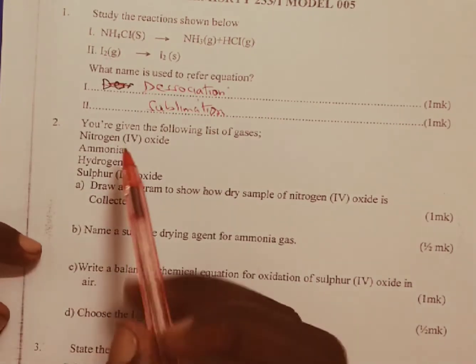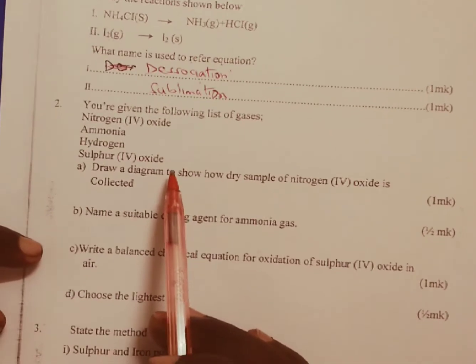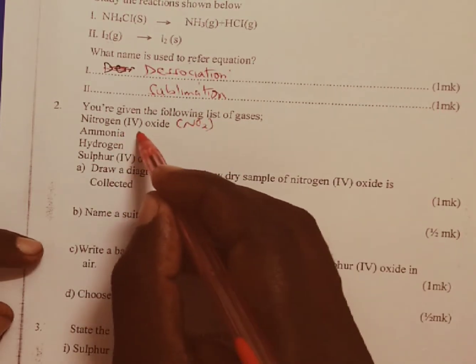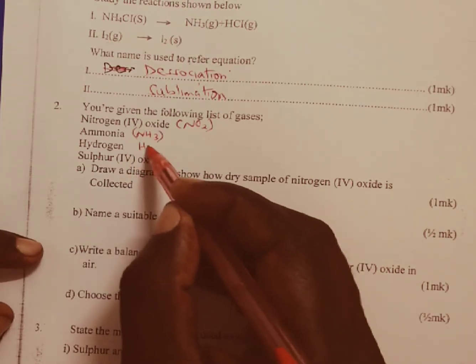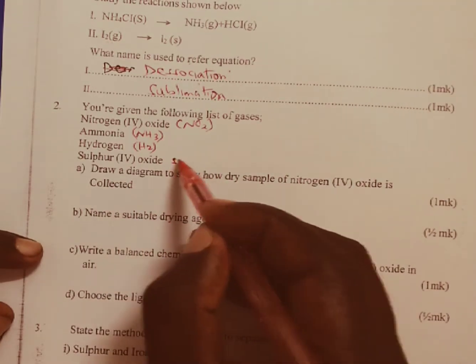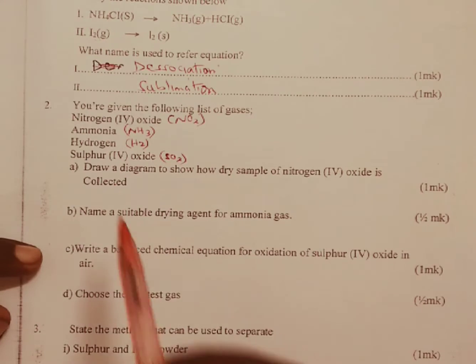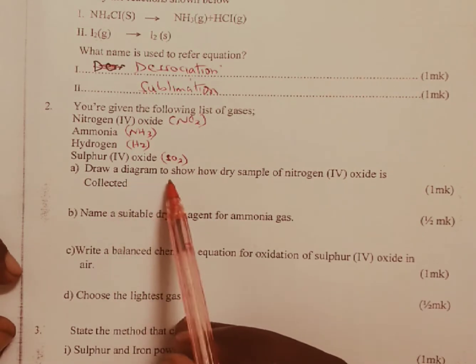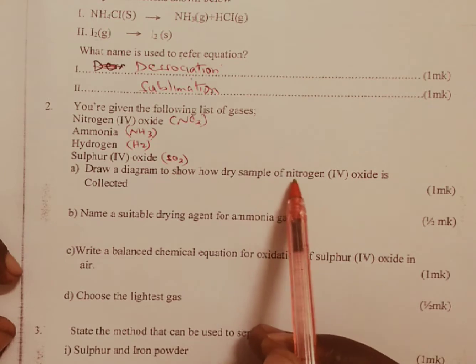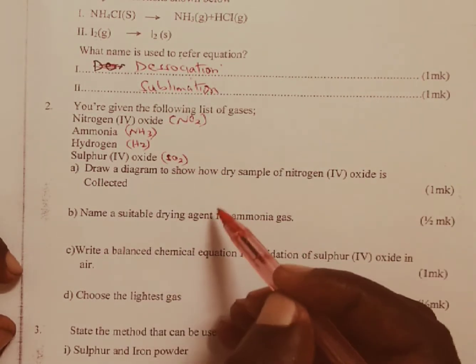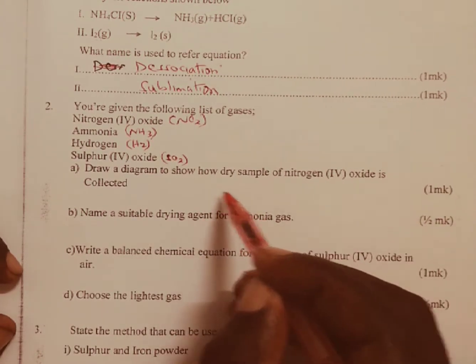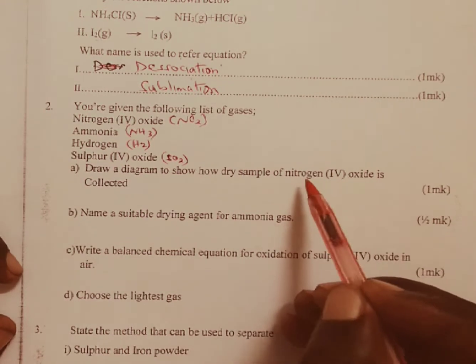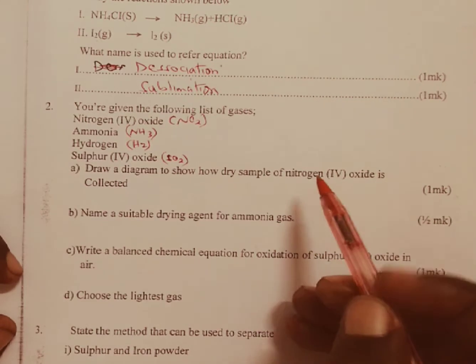Now we move to question number two. You are given the following list of gases: nitrogen 4 oxide (NO2), ammonia (NH3), hydrogen (H2), and sulfur 4 oxide (SO2). Part A asks: draw a diagram to show how a dry sample of nitrogen 4 oxide is collected. Nitrogen 4 oxide is heavier than air and therefore it is going to be collected by downward delivery.